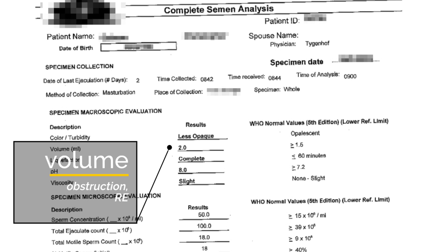Next is volume — the total amount of fluid you produced when you ejaculated into the cup. A high volume means nothing. A low volume usually, though not always, means that the fluid is being blocked or going in the wrong direction. If you have a low volume, your doctor will often ask you to repeat the test and collect your urine to see if the semen is passing into your bladder instead of out of the penis. This could be due to some nerve problems, medications, or surgeries.